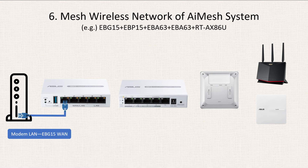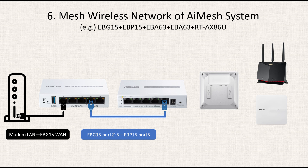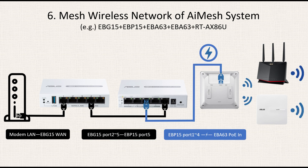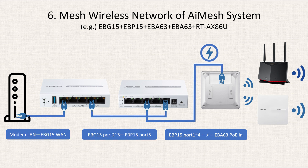Number six: the configuration involves EBG15, EBP15, EBA63, and RTAX86U. First, connect the modem's LAN to the WAN of EBG15. Second, connect either of LAN ports 2 to 5 of EBG15 to port 5 of EBP15. Third, establish another connection by linking either of PoE+ ports 1 to 4 of EBP15 to the PoE input of EBA63. Fourth, integrate RTAX86U and one additional EBA63 unit into the mesh system.